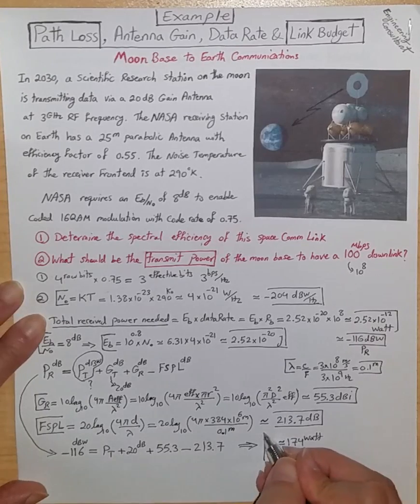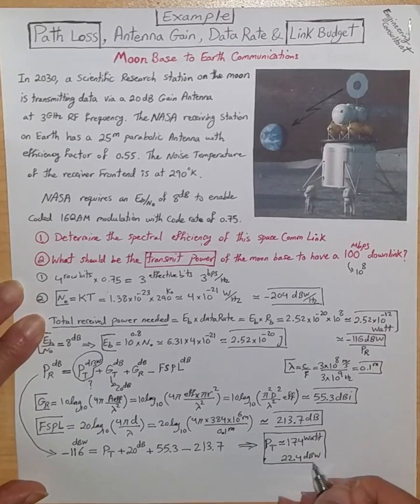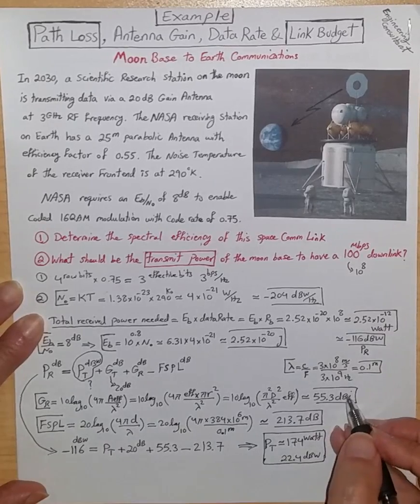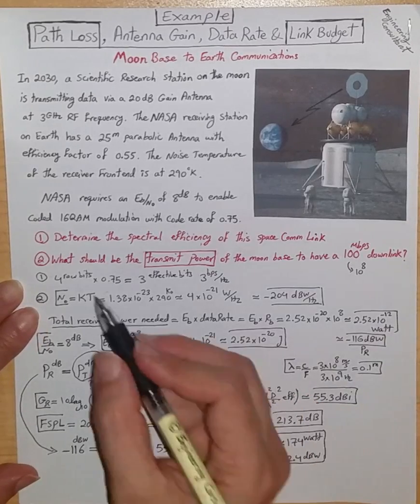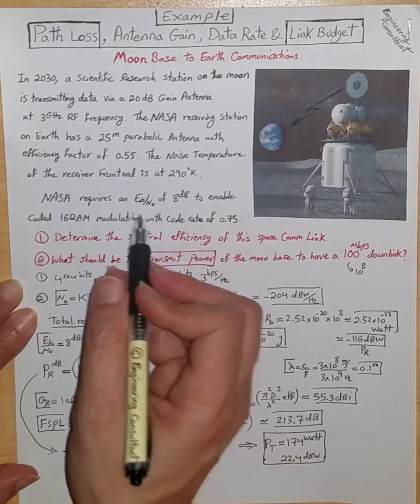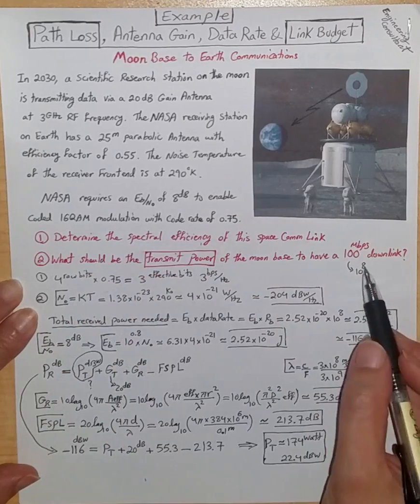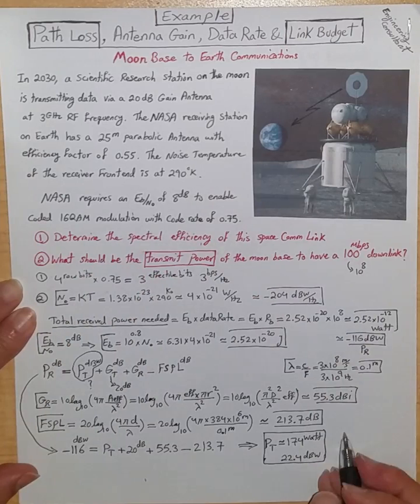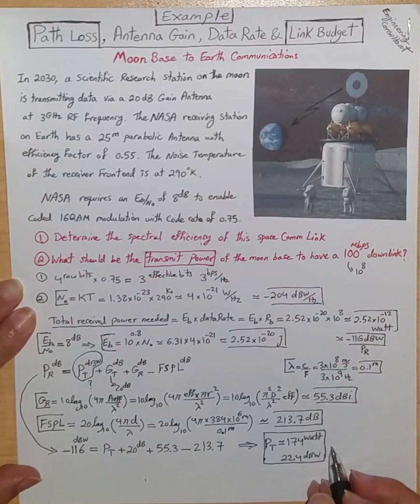With this transmit power, we can enable the communication link that satisfies what is required by NASA, enabling Eb over N0 of 8 dB and 100 Mbps downlink communication.